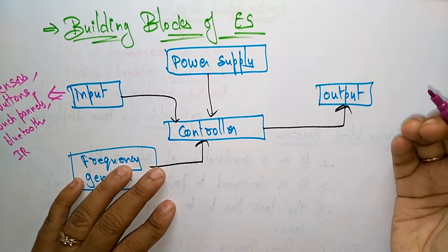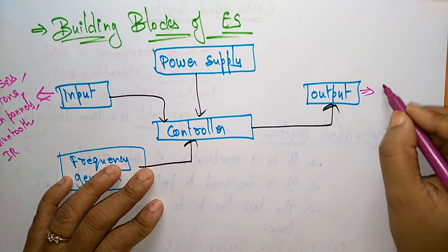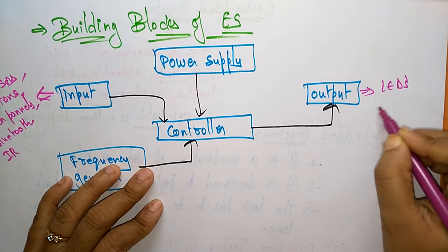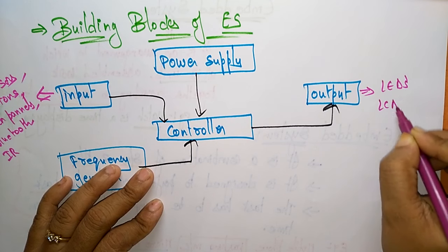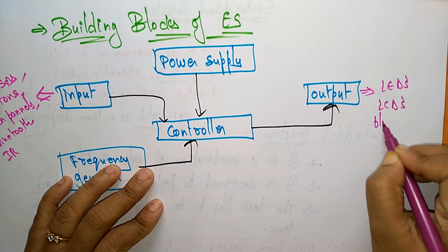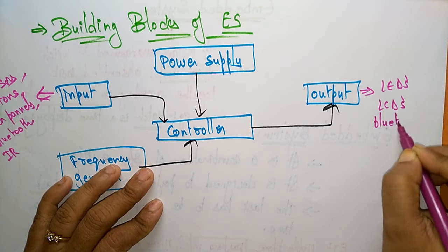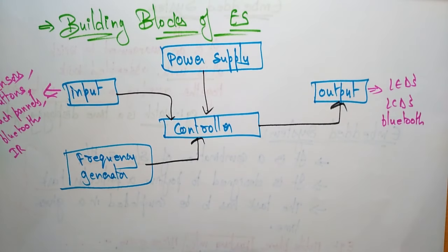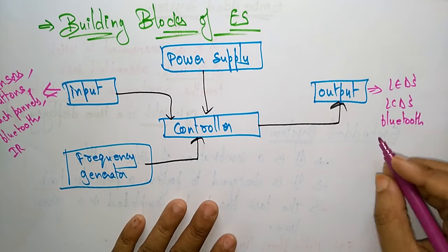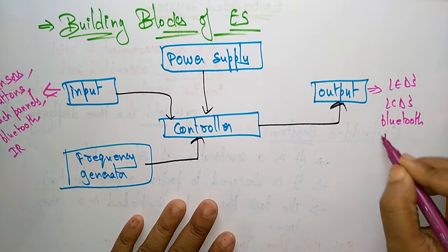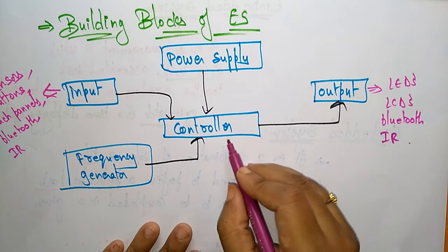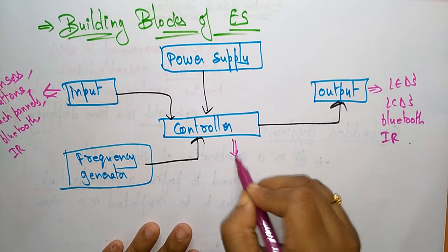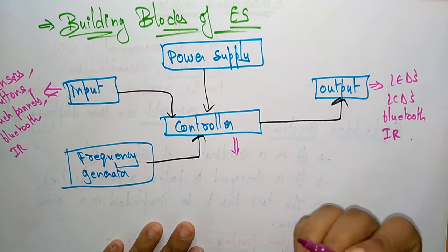The output may appear in the form of LEDs, LCDs, or even Bluetooth — meaning when you're connected to a device, Bluetooth can serve as both input and output. IR can also be an output. Now let's look at the controllers.